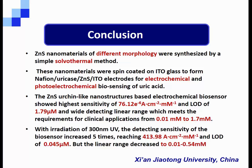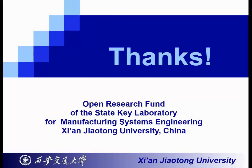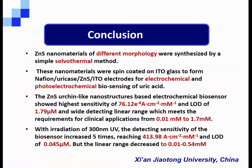In summary, we synthesized zinc sulfide nanomaterials of different morphologies only by controlling the ratio of the solution. We fabricated a working electrode by a simple spin-coating method for electrochemical and photoelectrochemical biosensing. Among the three structures, the urchin-like nanostructures show the highest sensitivity, and with 300 nm UV irradiation the detection sensitivity increased about four times, though the linear range decreases slightly. Thank you everyone.